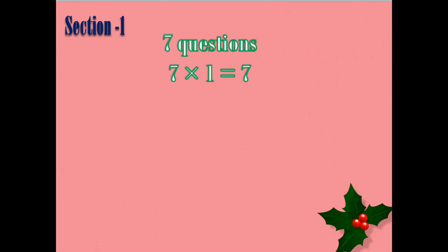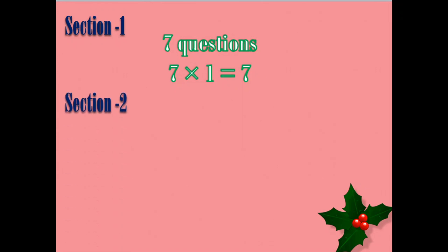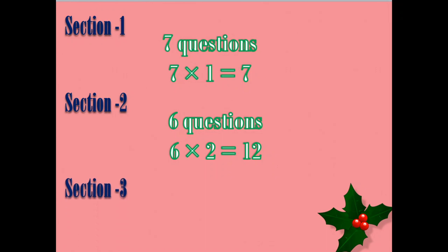Let's see the paper pattern. Section 1 contains 7 questions and each question carries one mark, so 7 ones are 7. Section 2 contains 6 questions and each question carries two marks, so totally 12 marks. Finally, Section 3 contains 4 questions and each question carries four marks, totalling 16 marks, and in this section you'll have a choice for every question.